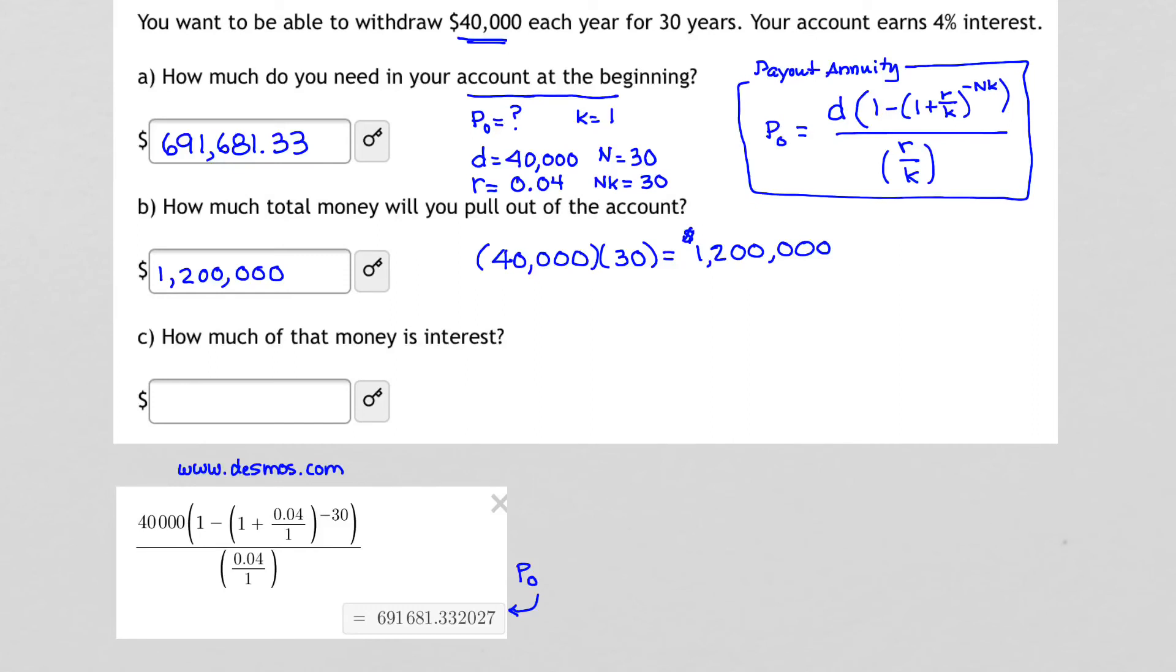Now, how much of that money is interest? Well, we take the amount that we pulled out, which was $1,200,000, and we subtract from it the amount that we started with at the beginning. So we started with, in our account, $691,681.33.